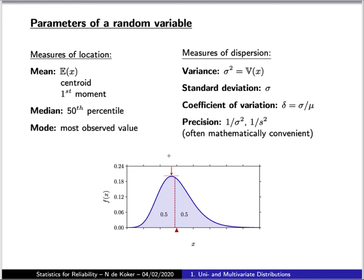Finally, there is the mode, which is the most observed value — the location of the peak of the distribution function. These three — mean, median, and mode — give you a measure of where the central part of the distribution function is. One also has parameters describing the extent to which the distribution is dispersed away from that central location, i.e., how spread out it is along the x-axis.